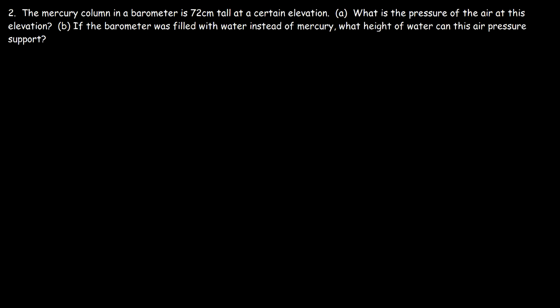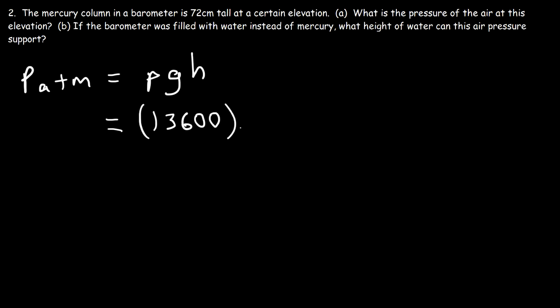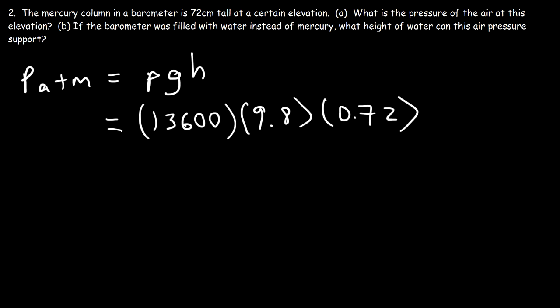Problem two: the mercury column in a barometer is 72 centimeters tall at a certain elevation. What is the pressure of the air at this elevation? The atmospheric pressure for a mercury barometer equals the density of mercury times gravitational acceleration times the height of the mercury column. Density is 13,600 kg/m³, g is 9.8, and the height is 72 cm divided by 100, which is 0.72 meters. This gives an atmospheric pressure of 95,962 Pascals, rounded to the nearest whole number.